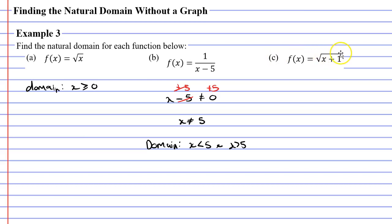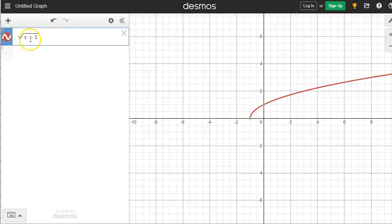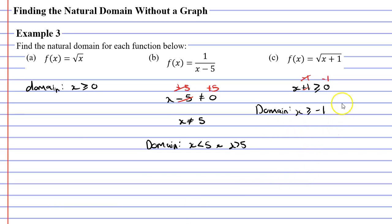Question C has the square root sign. Whatever's under the radical cannot be negative, so x plus 1 must be greater than or equal to 0. Subtracting 1 from both sides gives x is greater than or equal to negative 1. That becomes our domain. Checking in Desmos, the graph of f(x) = sqrt(x+1) starts at negative 1 and goes forever to the right, existing for all x values of negative 1 and above — exactly what we wrote.